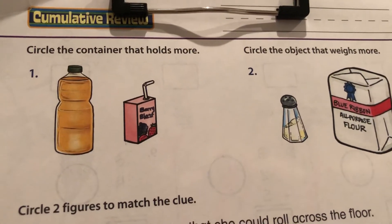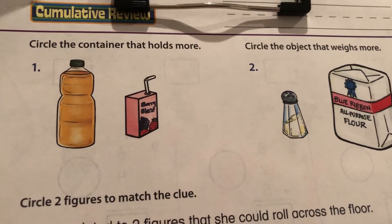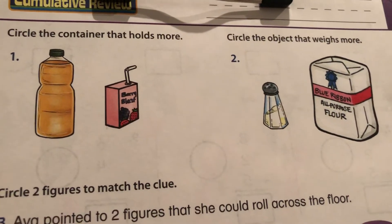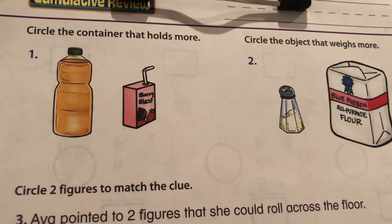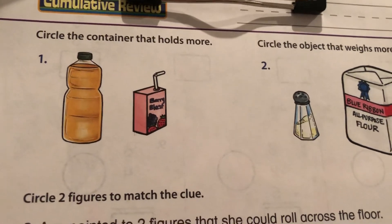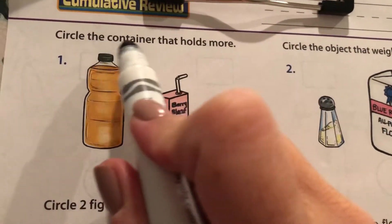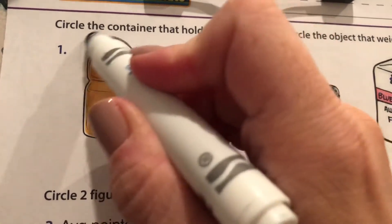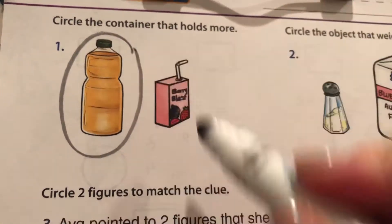Today's math is a cumulative review, which means it's a bunch of things that you've already learned about before, but we're just doing it to help us remember how to do them. So the first one says circle the container that holds more. Yes, for sure this big sports drink.